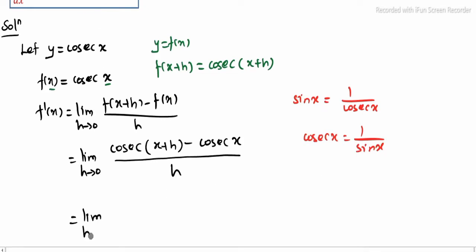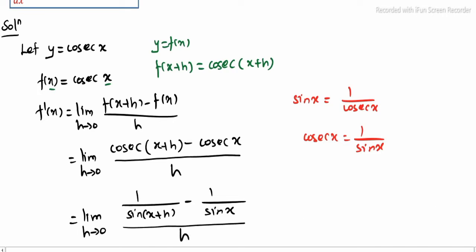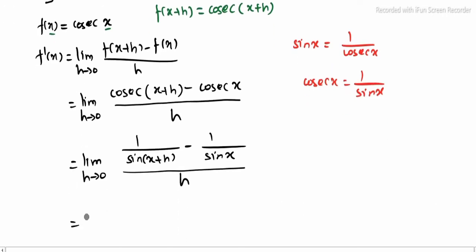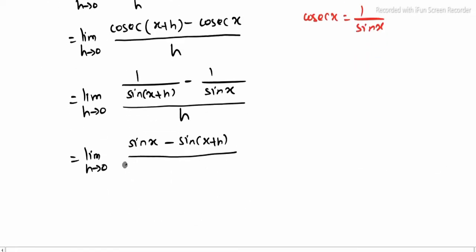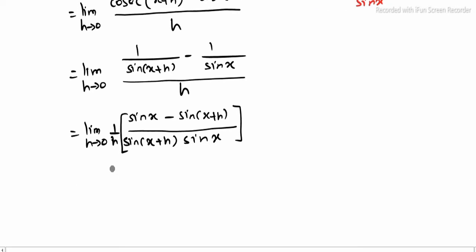So limit h tending to 0: 1 divided by sin of x plus h, minus 1 divided by sin x, total whole divided by h. Now cross product pannla. So limit h tending to 0: sin x minus sin of x plus h, whole divided by sin of x plus h into sin x.